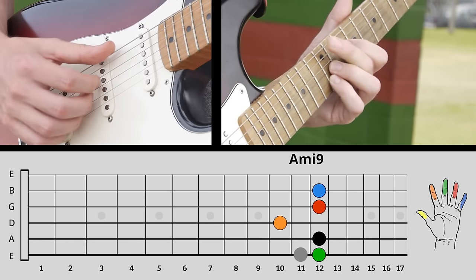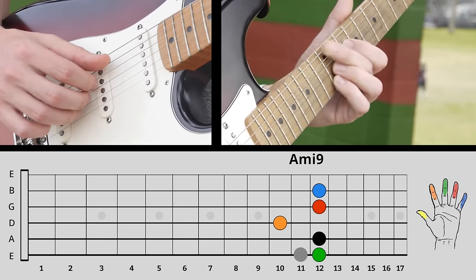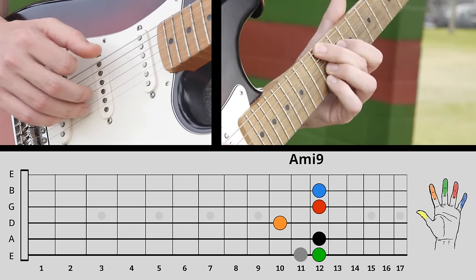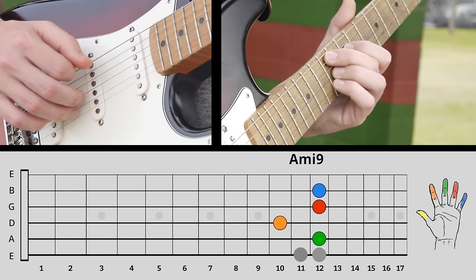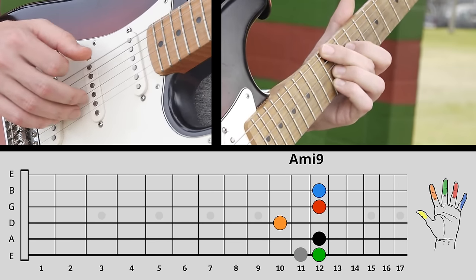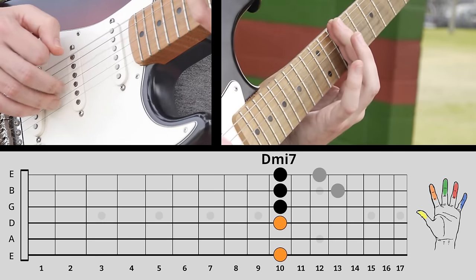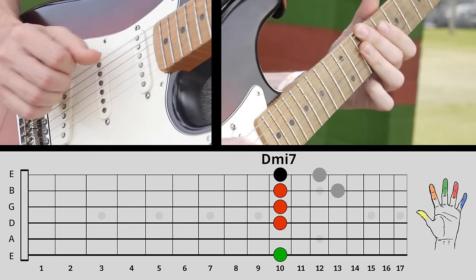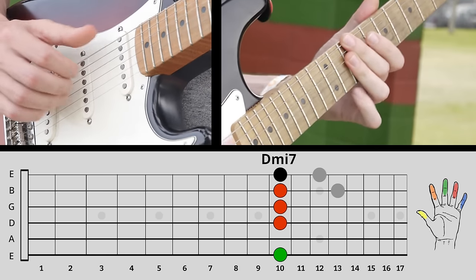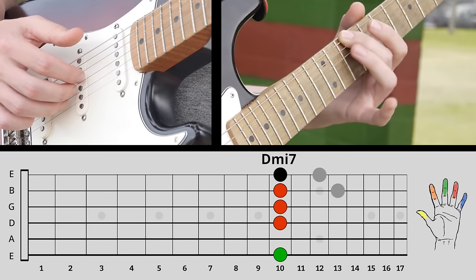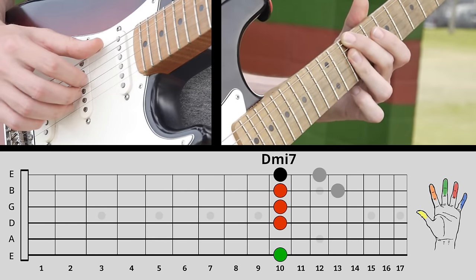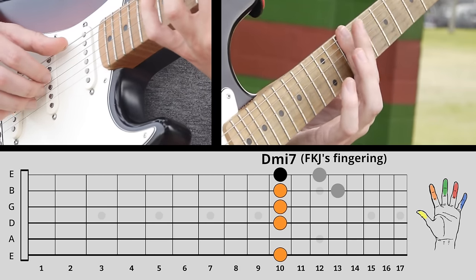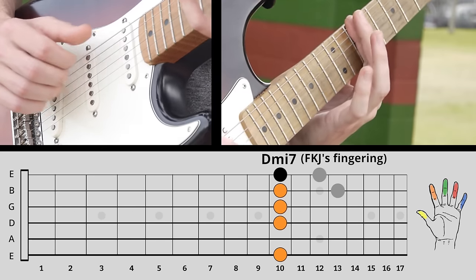Then we bring this A root to an E which is 12th fret on the E string. Then we walk it down, so that's the 11th fret. That chord is a D minor seven. You can either play it the traditional way, which would be finger two on the root and then bar three across. But being you're coming from here, you might just want to use the first finger and lay it across, but you're going to skip over that A string.